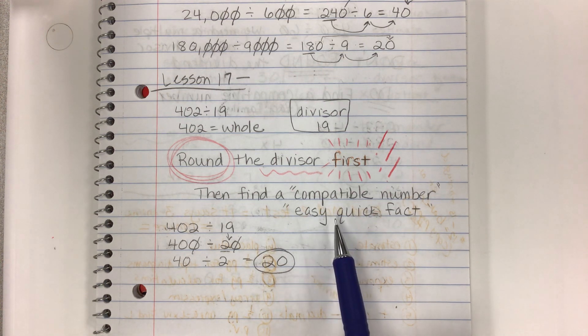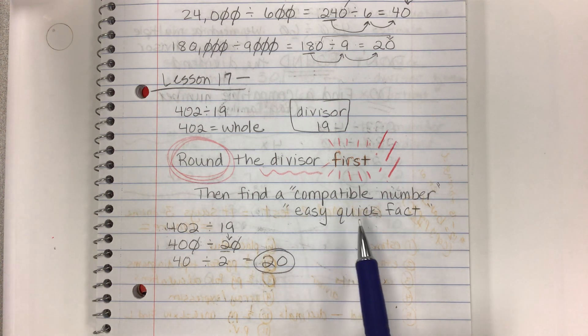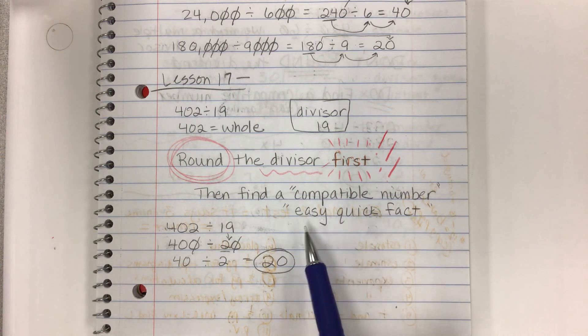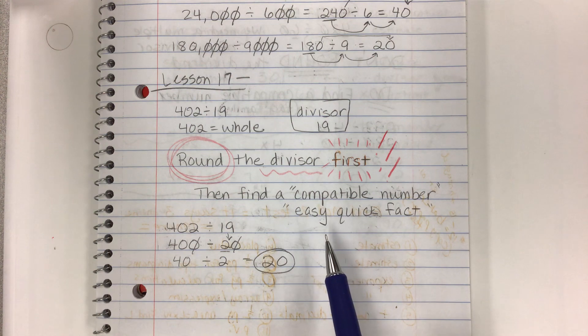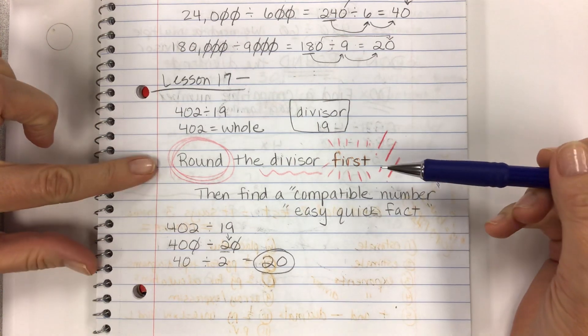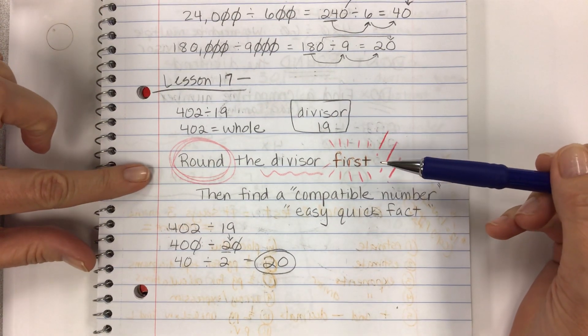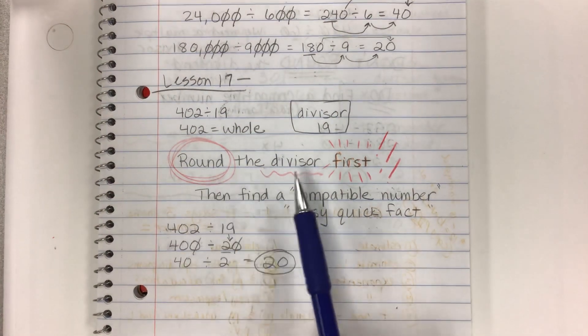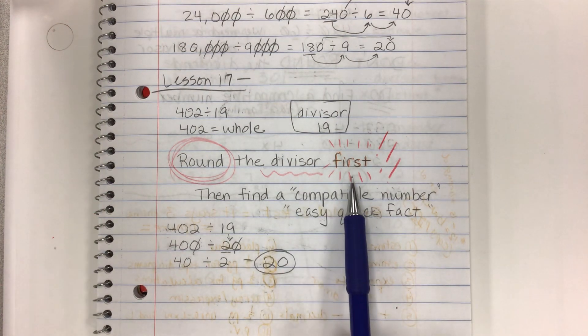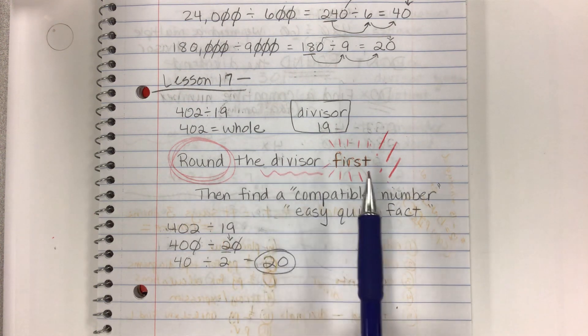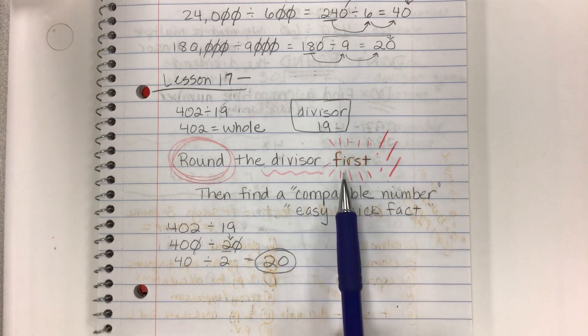Back in third grade, you guys did fact families. It's numbers in the fact family, like 4 times 5 is 20, and 5 times 4 is 20, so 20 divided by 4 is 5, and 20 divided by 5 is 4. It's those numbers that go in that circle, so pretty sure you can see that there's something really important you need to know from Lesson 17, and that is that you're going to round the divisor first.